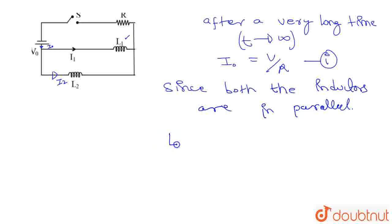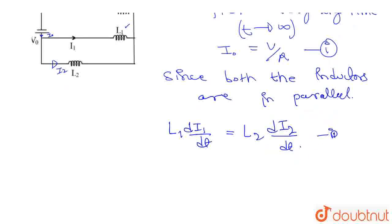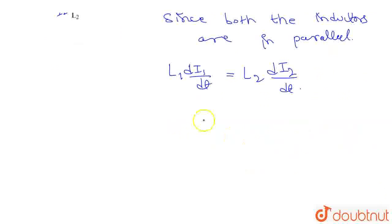So, here we have L1 times dI1 by dt, this will be equals to L2 times dI2 divided by dt. Let's name this as equation 2. Now, again, consider this for after a very long time.